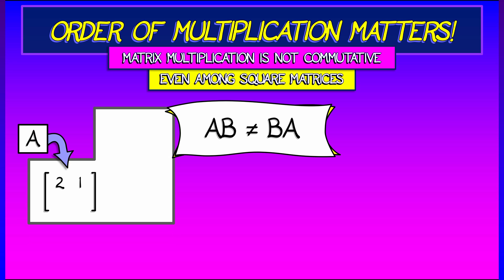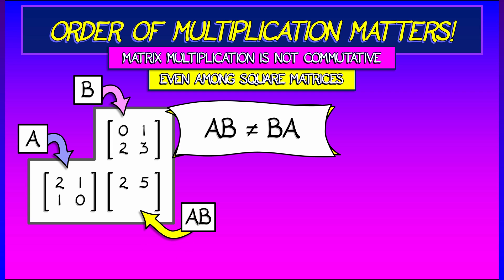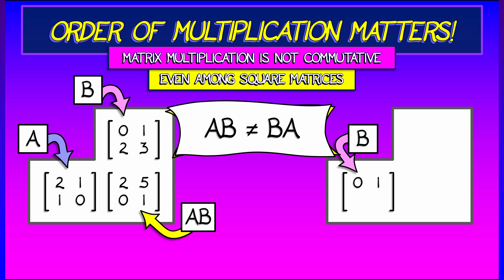It is not necessarily true that A times B and B times A are the same matrix. Here's a simple example. Let's say A is a 2 by 2 matrix, 2, 1, 1, 0. And B also is a 2 by 2 matrix, 0, 1, 2, 3. Something random. What happens when we multiply them together? You can check that A times B is the 2 by 2 matrix, 2, 5, 0, 1.